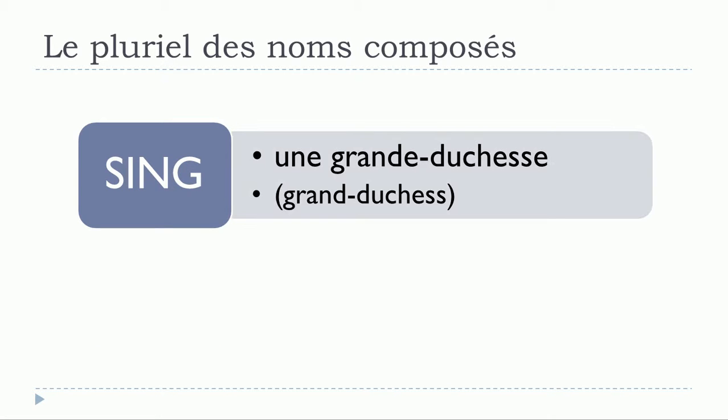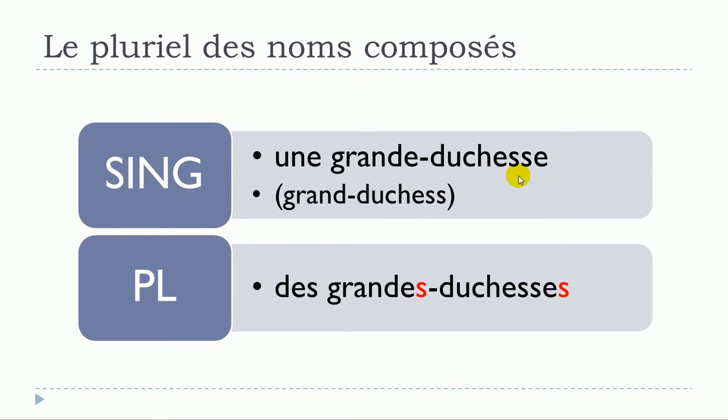It's also possible to see composed words or nouns with first the adjective grand but at the feminine form like here with grande and then duchesse. In that case well not really difficult because you just do what we've been doing so far so you just put s at the end of the first part and s at the end of the second part. You will get une grande duchesse plural des grandes duchesses.